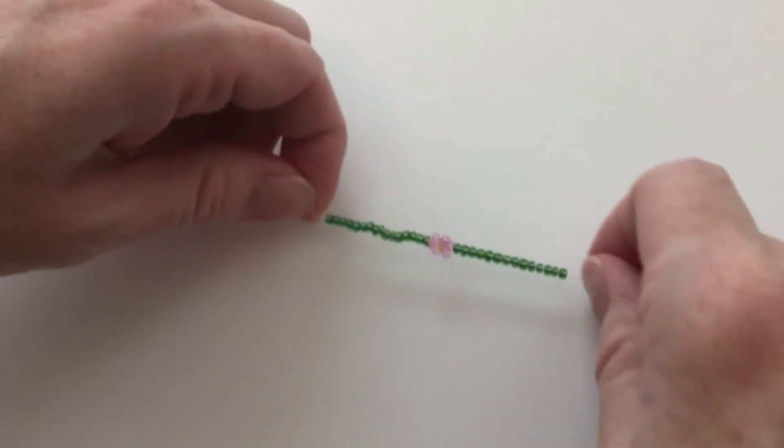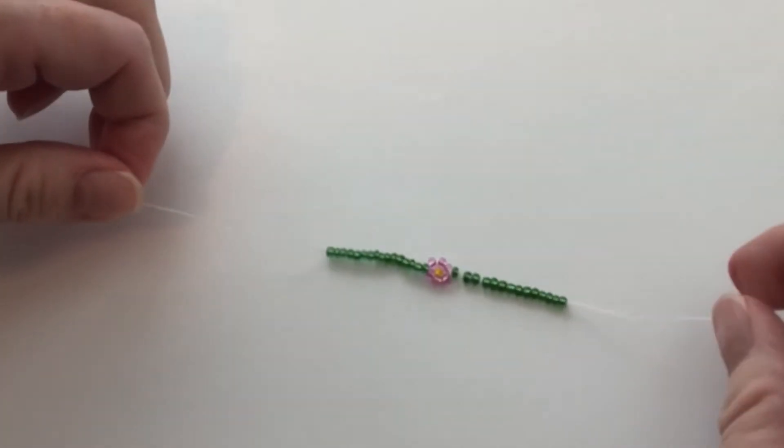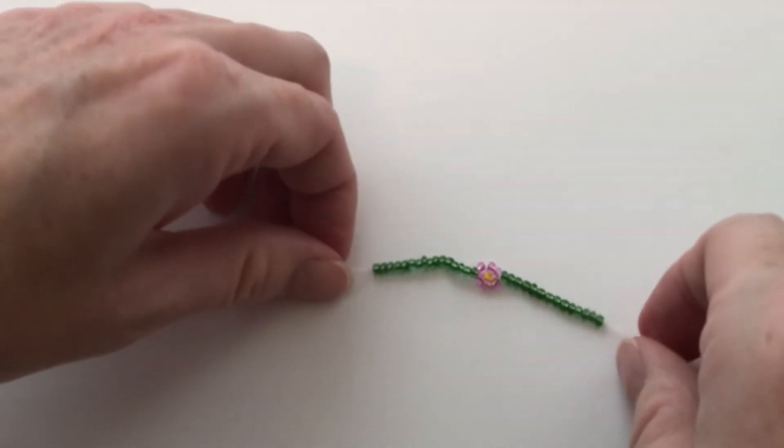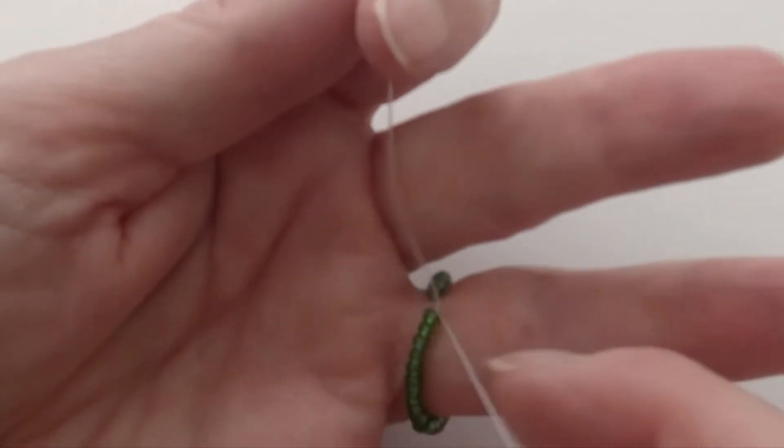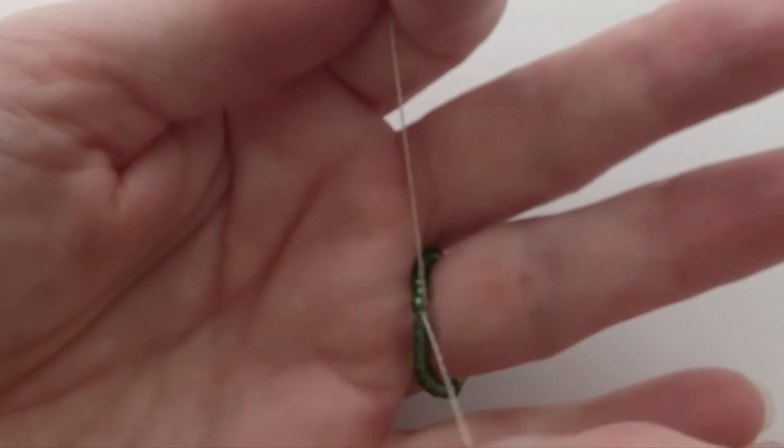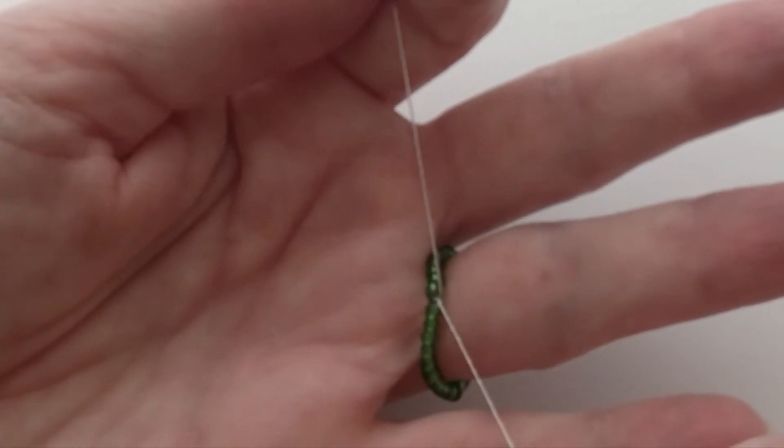Once you've finished with that, pull out the slip knot on the first side and measure the ring around your finger to make sure that it fits. You want it to fit just snug around your finger so that you can easily get it on and off. So that looks about right.